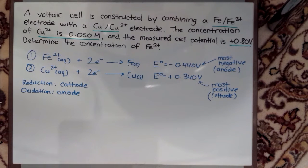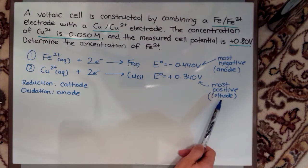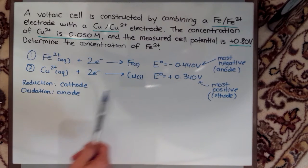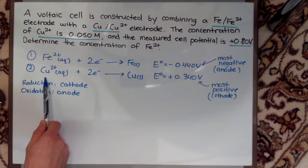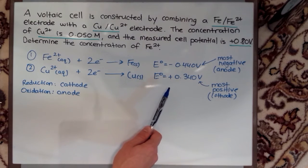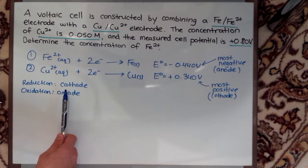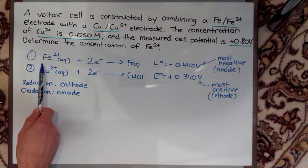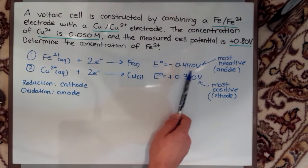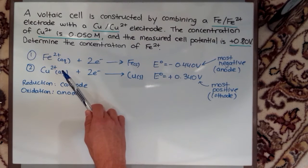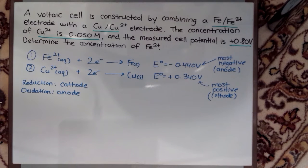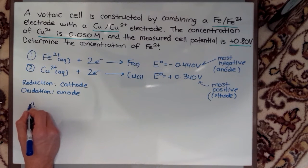That means once I've determined what my anode and cathode is, if these are reduction potentials, the cathode reaction can stay as is because reduction happens at the cathode, but if this is a reduction potential and this is my anode reaction, I need to flip this equation. So let's now write what the reactions should be at the anode.